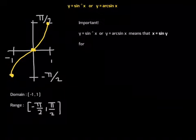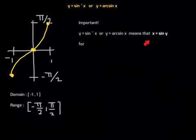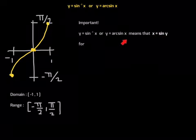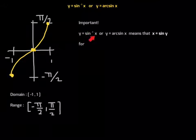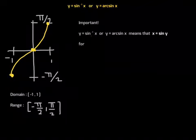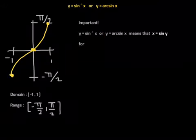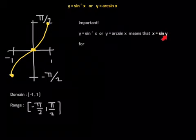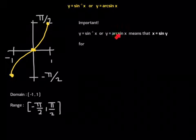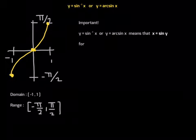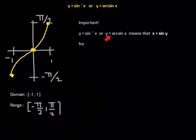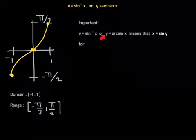Now watch this — this is really important. Y equals inverse sine of x, or y equals arc sine of x, means that x is sine of y. That is to say, y equals arc sine of x means y is the angle whose sine is x. In other words, y is the angle such that when you take sine of that angle, you get x. That's what this notation means, and it is very, very, very important that you understand what this notation means.